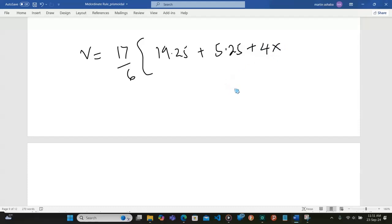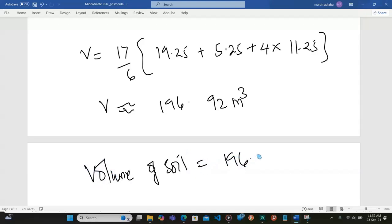Then plus 4 times A1, of which we have gotten 11.25 square meters. When we compute this, we're going to find the volume approximately equal to 196.92 cubic meters. So the volume of the soil will be 196.92 cubic meters.